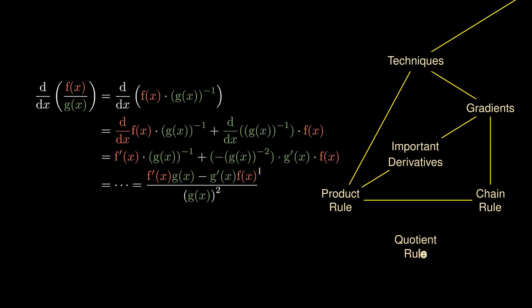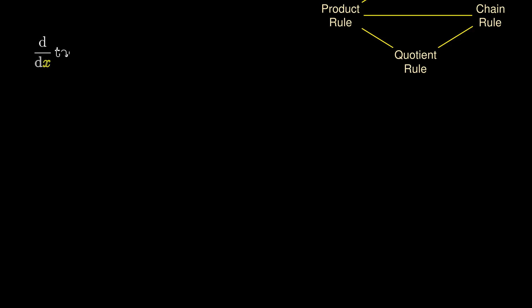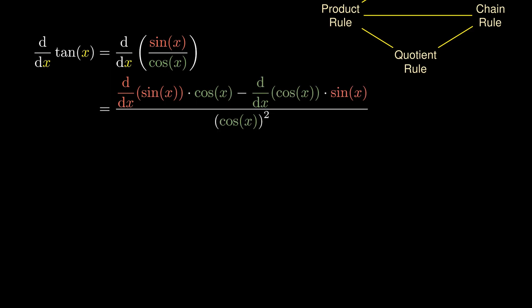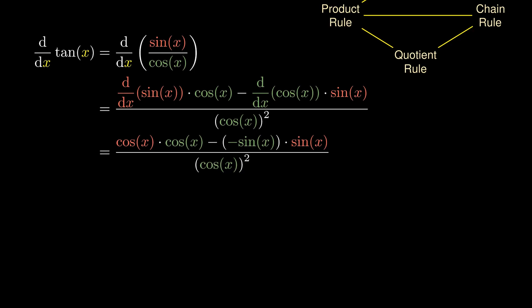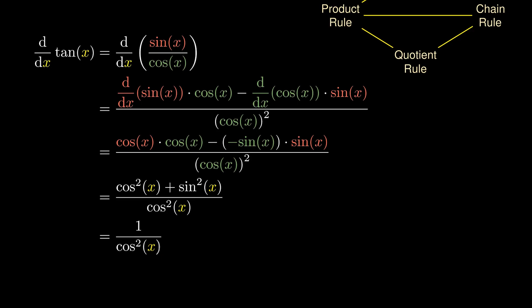This is known as the quotient rule for differentiation. Having calculated the derivatives of both sine and cosine, a natural question is: what's the derivative of the tangent? We write tangent as sine over cosine and apply the quotient rule: the derivative of the numerator times the denominator minus the derivative of the denominator times the numerator, all over the denominator squared. The derivative of sine is cosine and the derivative of cosine is negative sine. Rewriting the numerator gives cosine² plus sine², which by a well-known identity equals 1. Since 1 over cosine is the secant, the derivative of tangent is secant².